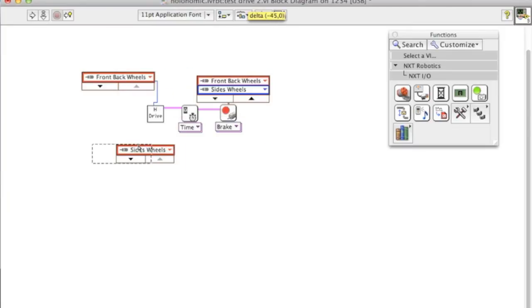Now I need to give my inputs into my holonomic drive. I give my two motors. I need to give a heading so I can create a constant. I also need to give a power so I can create a constant for that as well.